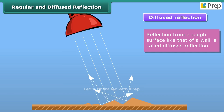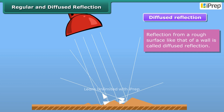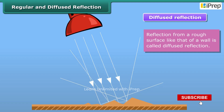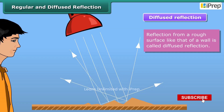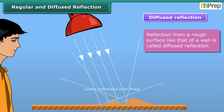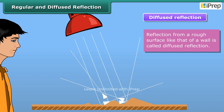In this case, the different portions of the surface reflect the incident light in different directions. The light sent to our eyes by most of the objects we see around us is due to the diffused reflection from their surfaces.